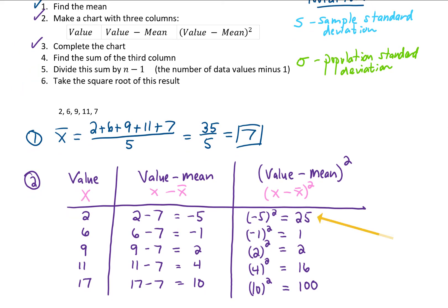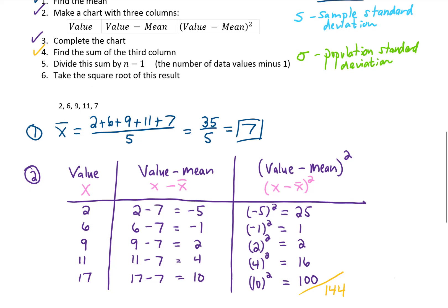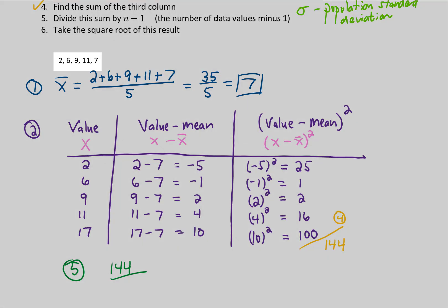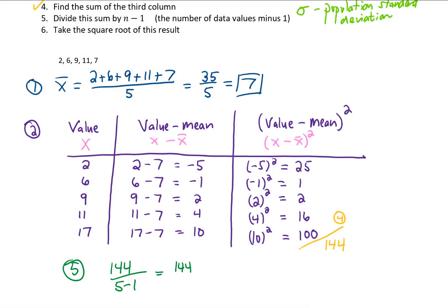Step 4 is to sum all of the values in the third column: 25 plus 1 plus 2 plus 16 plus 100, which adds up to 144. Step 5 is to take that result and divide by n minus 1. We had 5 data values, so n is 5, meaning we divide 144 by 4 to get 36. Finally, step 6 is to take the square root of that result — the square root of 36 gives us a standard deviation of 6.